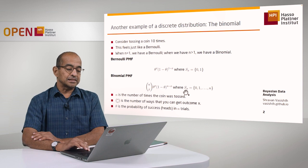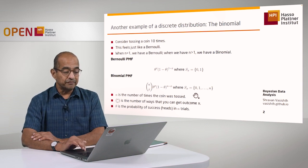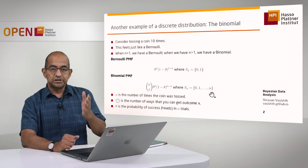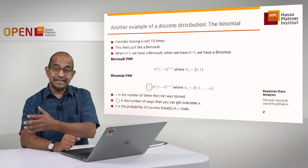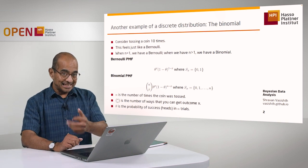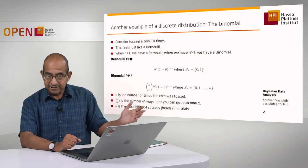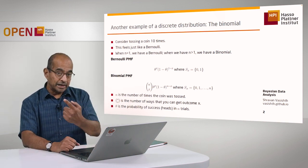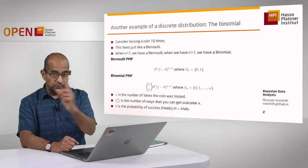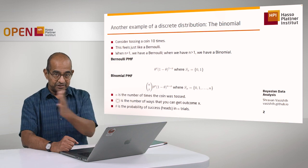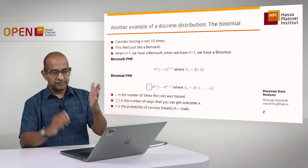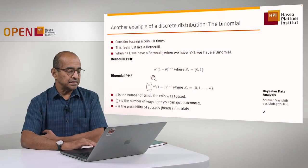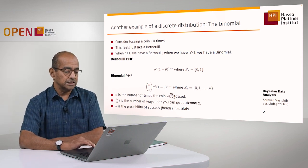The support of x is not just 0 and 1 anymore. There are 11 possible outcomes: 0, 1, 2, 3, 4, 5, 6, 7, 8, 9, 10. That means if I toss the coin 10 times, I could get 10 tails in a row — not a single head. Or I could get only one head, but in one of 10 possible locations. That's why we have the n choose x term in the probability mass function.